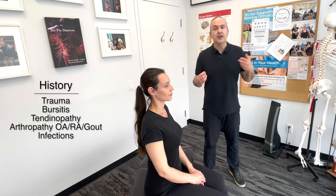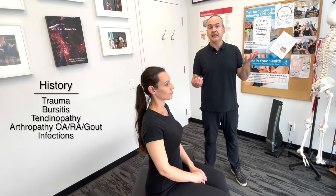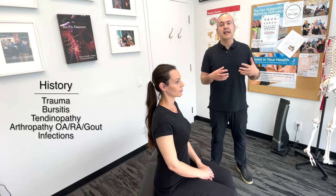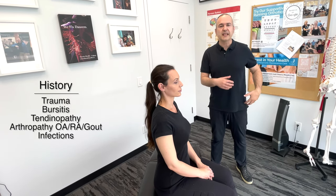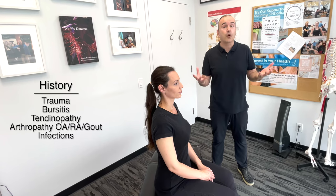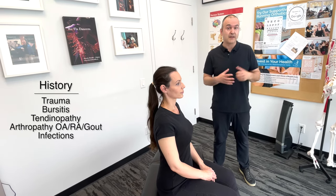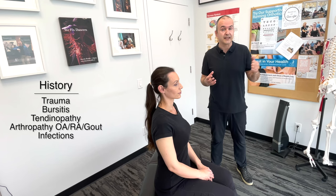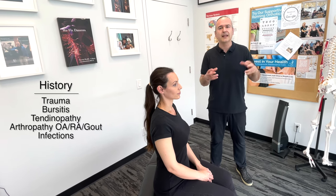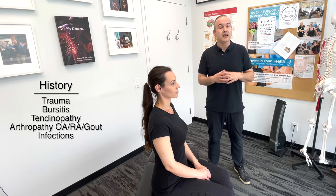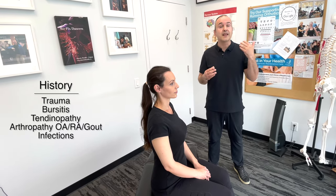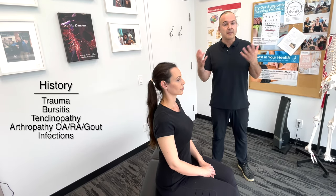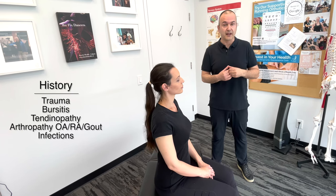When interviewing the patient, you're going to listen for any traumas that may have occurred, if the patient has noticed any swelling, any changes in skin, redness, any deformity in the joint that they came in to have you examine. You're going to listen for perhaps a bursitis — there might be some tenderness, swelling, maybe some redness in an area. Listen for tendinopathies, any painful tendons or snapping, something that the patient will tell you about in that area.